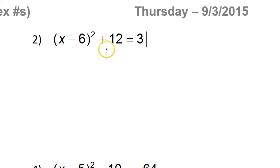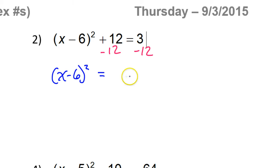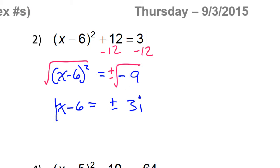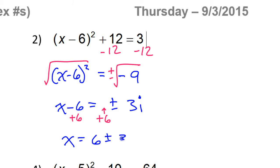On this one, first you have to subtract 12 from both sides. So that gives us x minus 6 squared is equal to negative 9. Once you have the parentheses by themselves, you can take the square root of both sides — don't forget your plus or minus. That cancels out the exponent, so we just have x minus 6 is equal to plus or minus 3. Because the negative is under the radical, it'll be i. Still have to get x by itself, so we have to add 6 to both sides — this has to go in front before the plus or minus. So that's going to give you x equals 6 plus or minus 3i.